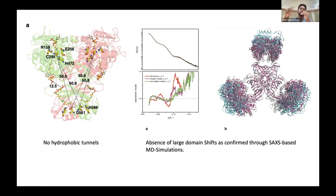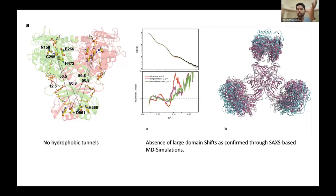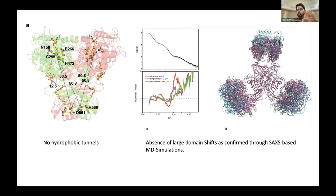The question was whether the two active sites come closer and move apart to channel the substrate. For this we used a combination of simulation, but because the complex was large we couldn't run a simulation as-is, so we used small angle X-ray scattering (SAXS) data to constrain the simulation runs. At the end we realized the complex was not undergoing much movement — it was quite stable, and both domains were still about 50 Å apart. So both hypotheses — tunnels and domain closure — were ruled out.